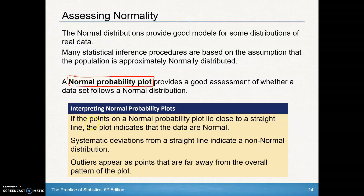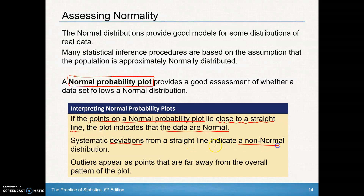We want the points on a normal probability plot to lie close to a straight line. In other words, when we plot the dots, a straight line follows that data very well. If that's the case, then the data are normal. Any kind of deviations from the straight line would indicate a non-normal distribution — if the dots don't follow a line well, the data is probably not normal.